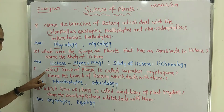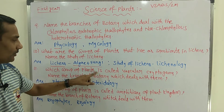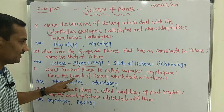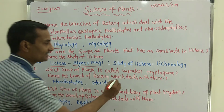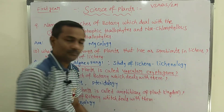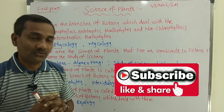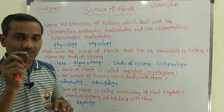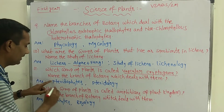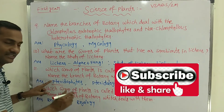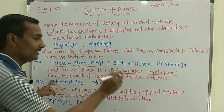Eleventh question: which group of plants is called vascular cryptogames, and name the branch of botany which deals with them? Vascular cryptogames are non-flowering plants. The non-flowering plants which have vascular tissues are pteridophytes. Pteridophytes have vascular tissues but do not produce flowers, that is why they are called vascular cryptogames.